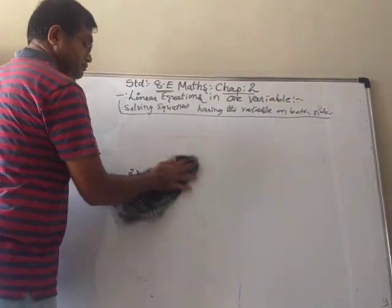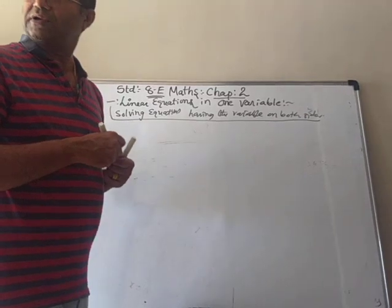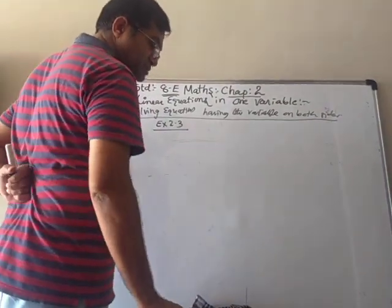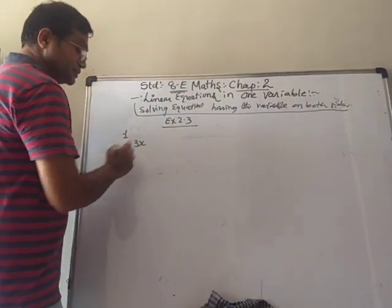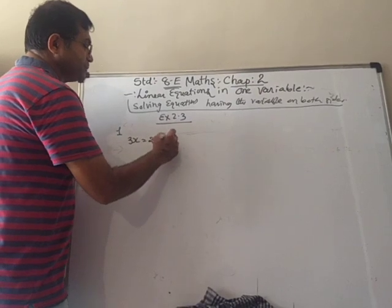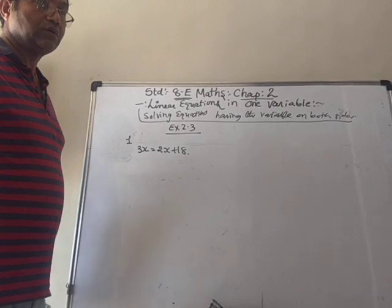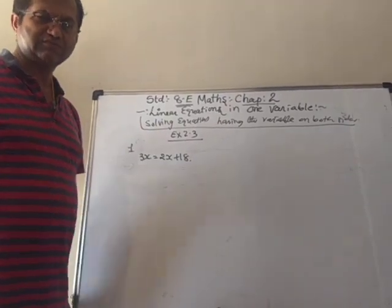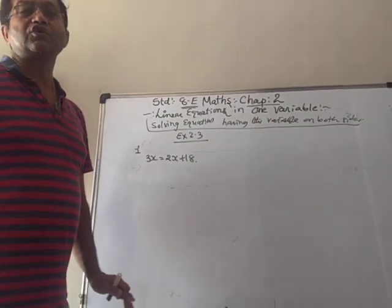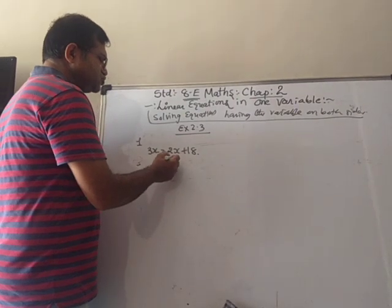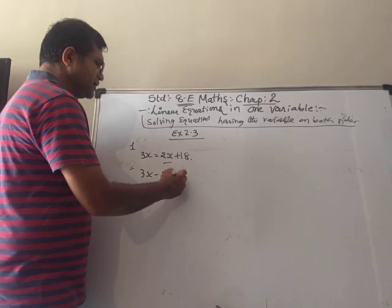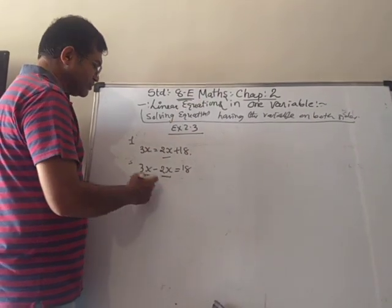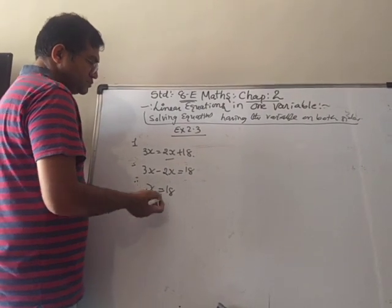Exercise 2.3, question 1: Solve 3x equals 2x plus 18 and check your result. Note: checking results can be done on a rough page, you don't need to mention it in exams. We bring 2x to the left side, so 3x minus 2x equals 18. 3x minus 2x is 1x, so x equals 18.